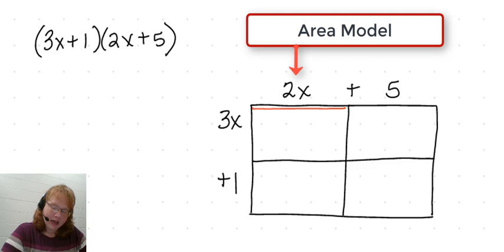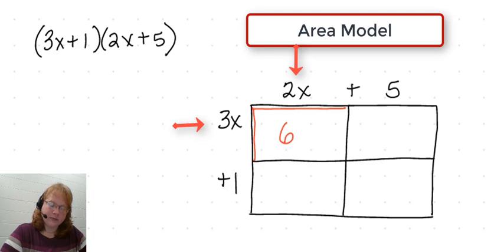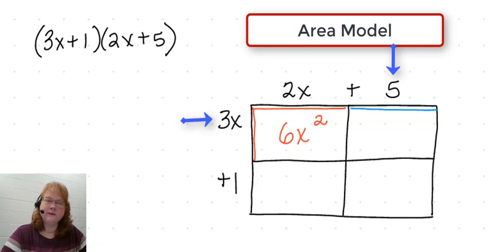The first rectangle has a length of 2x and a length of 3x. When we multiply those two parts together, 2 times 3 is 6 and x times x is x squared. Let's look at the second rectangle. It has a length of 5 and a length of 3x. When I multiply these two together, I get 3x times 5 is 15x.